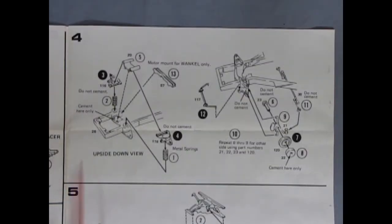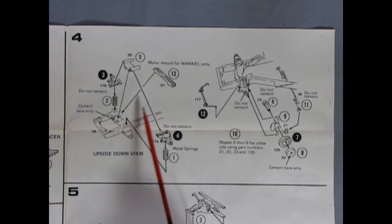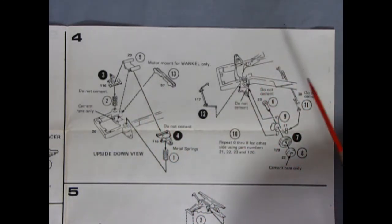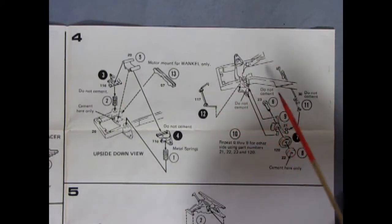Here we have our front suspension showing the real metal springs going in place with our upper A arms and this little tab locks them in place so that they will move up and down. Then we have our motor mount for the Wankel which would glue in here but you leave it off for the 454. Then underneath we have our poseable front suspension and our front stabilizer going in place here.